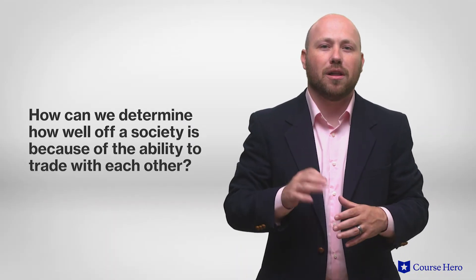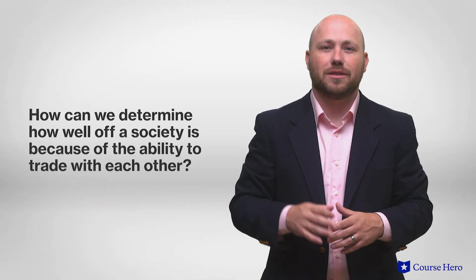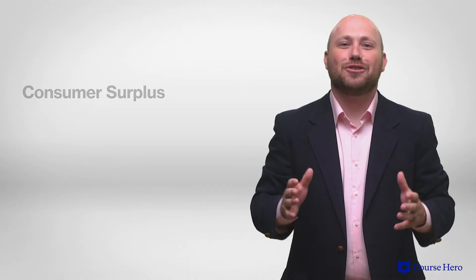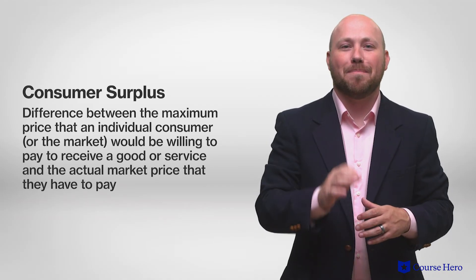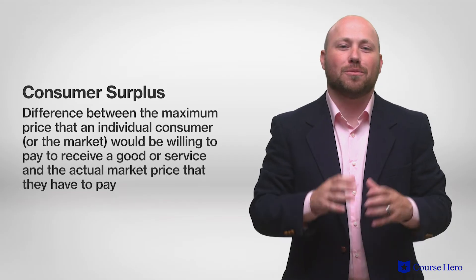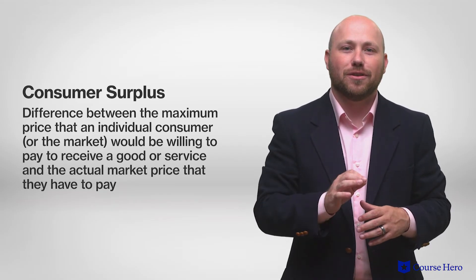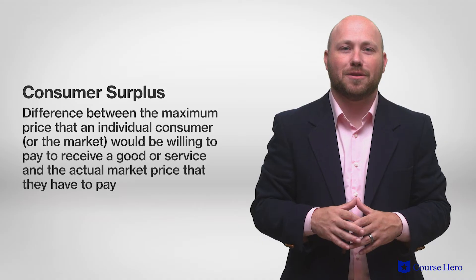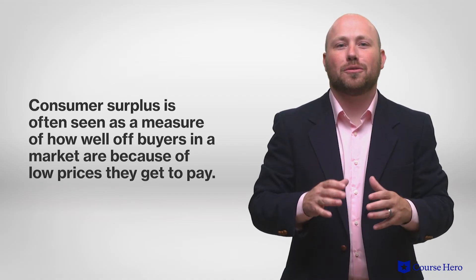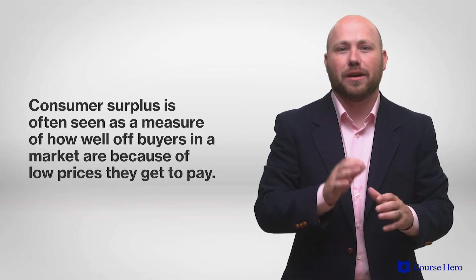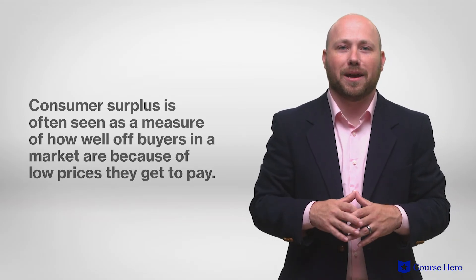But how can we determine how well off a society is because of the ability to trade with each other? This is where the concepts of consumer surplus and producer surplus become valuable. Consumer surplus is the difference between the maximum price that an individual consumer or market would be willing to pay to receive a good and the actual price they have to pay. Consumer surplus is often seen as a measure of how well off buyers are in a market because of the low prices they get to pay.